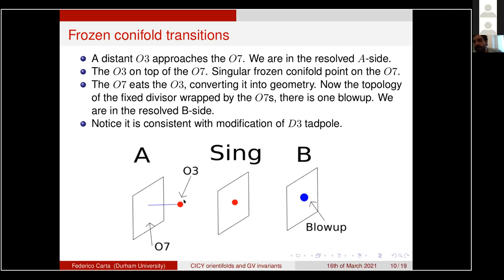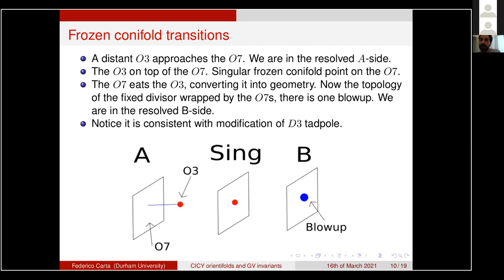This leads to the concept of a frozen conifold transition: starting from the type A resolution branch with an O7 and O3, the O3 moves closer and collides with the O7. Following into the type B branch, the O7 absorbs the O3, converting it to geometry so the O3 disappears and the O7 wraps a ℂ²/ℤ₂ blown up at a point. This is consistent with modification of the D3 tadpole: one O3 disappears and the Euler characteristic of the four-cycle changes accordingly.